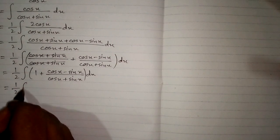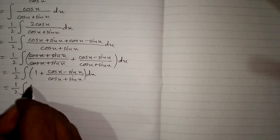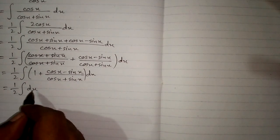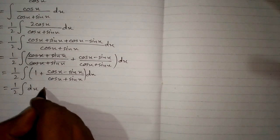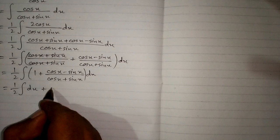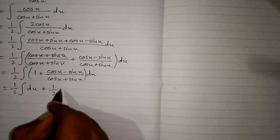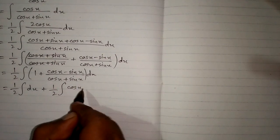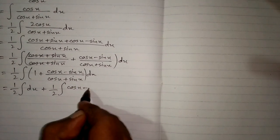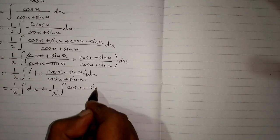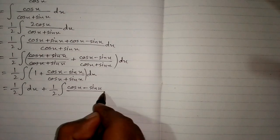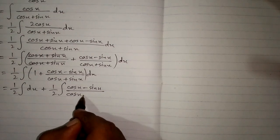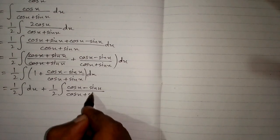Now we will apply the integral on both sides. We have half of dx, since 1 multiplied by dx is dx, and then plus half of cos(x) minus sin(x) upon cos(x) plus sin(x) dx.